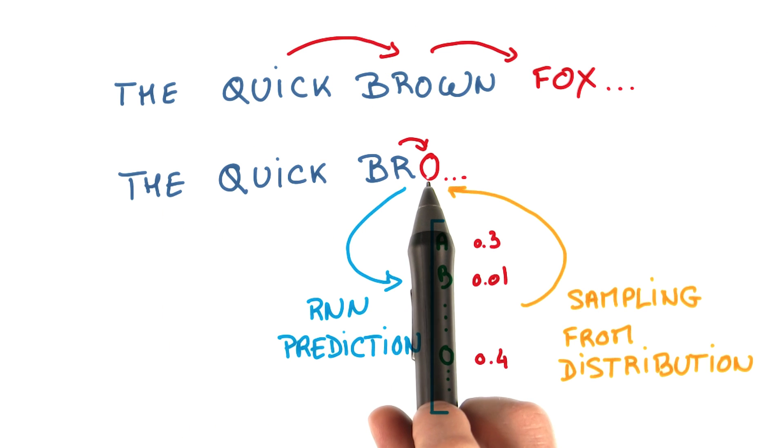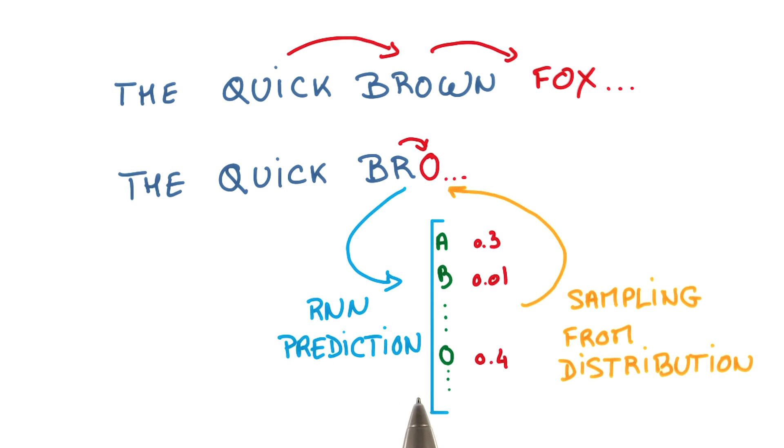For that, you take your sequence at time t, you generate the predictions from your RNN, and then you sample from the predicted distribution, meaning you pick one element based on its probability, and feed that sample to the next step, and go on. Do this repeatedly,